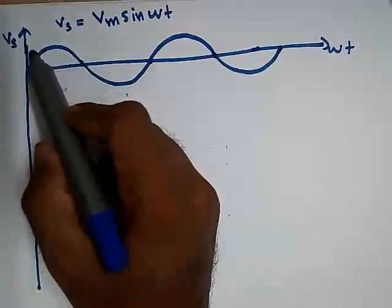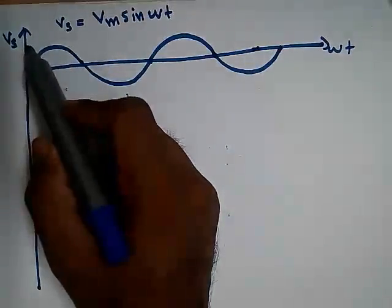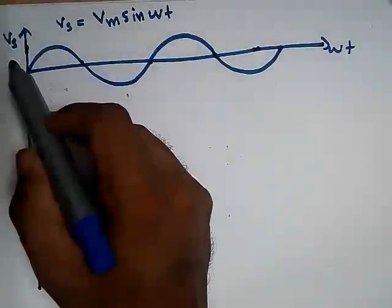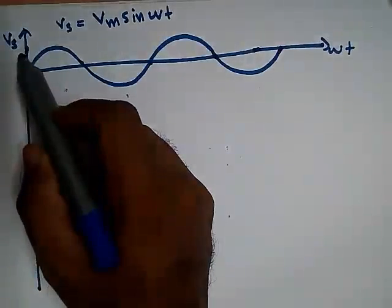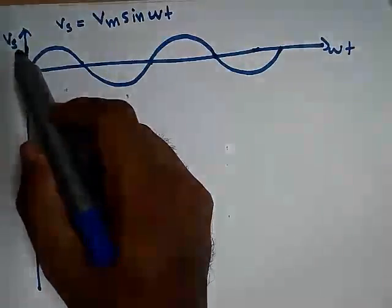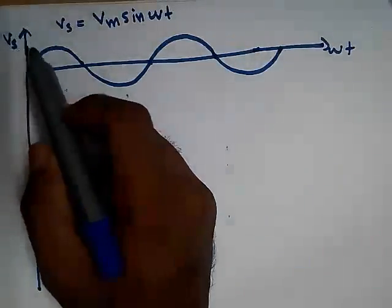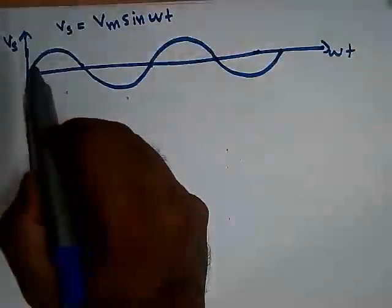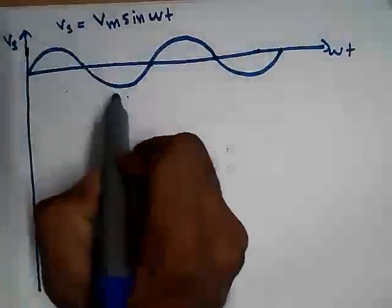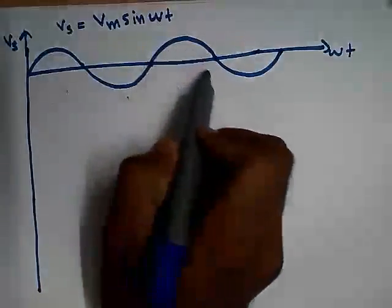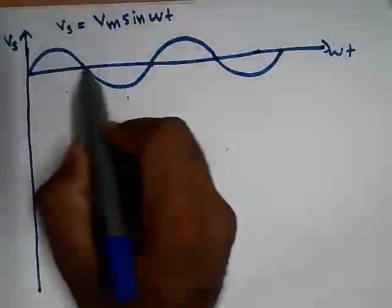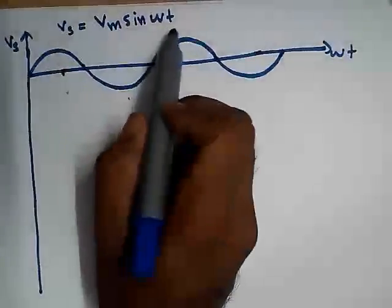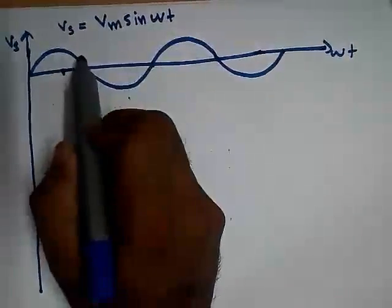First we have to show the supply voltage as a waveform. Vs is termed as supply voltage and it is a sinusoidal voltage. We can express its waveform as Vs equal to Vm sin omega t.